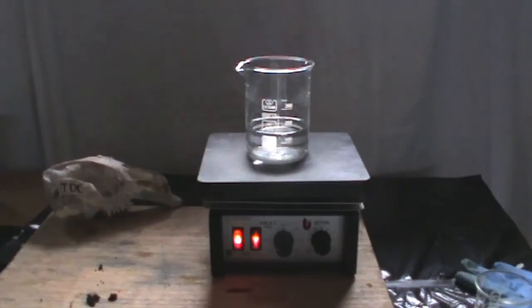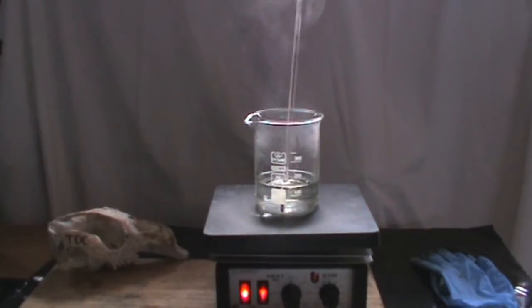To concentrate the aqueous sulfuric acid solution, we need to boil off the water until we see dense fumes of white smoke. Place the aqueous solution of sulfuric acid on a hot plate and heat. We can see the water evaporating off.